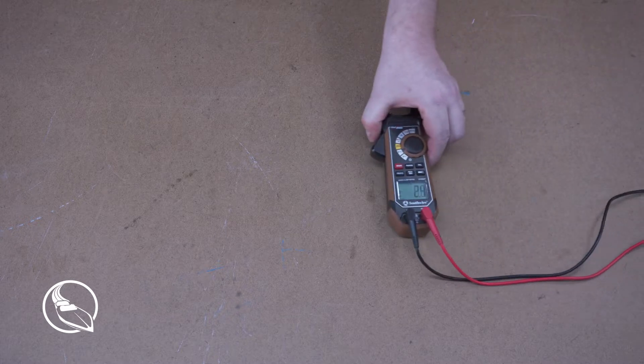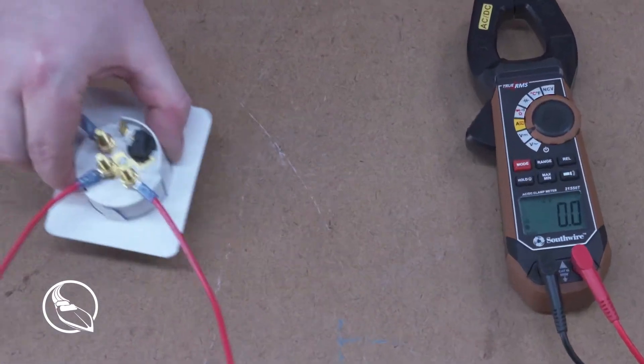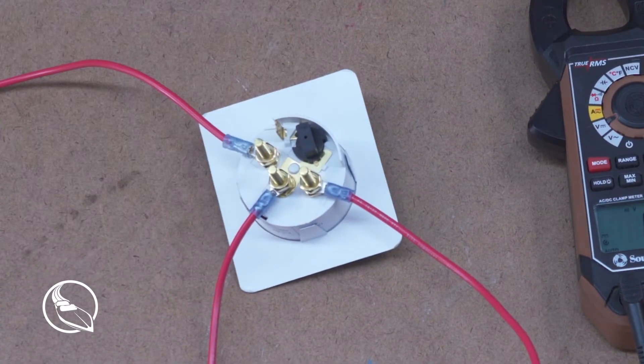The first step that we're going to take to troubleshoot your fuel gauge is to make sure that we are getting voltage from your power source or battery bank. So, we're going to need our meter, and I've got the gauge here. I'm going to flip it over and be looking at the back side.